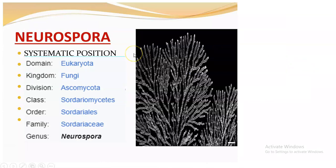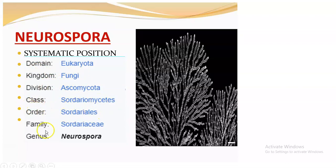Neurospora's systematic position: Domain — Eukaryota. Kingdom — Fungi or Mycota. Division or Phylum — Ascomycota. Class — Sordariomycetes, which is very important. Order — Sordariales. Family — Sordariaceae. Genus — Neurospora.